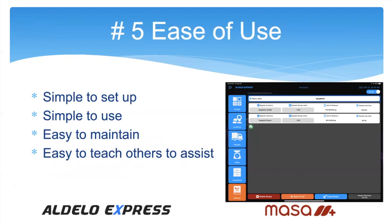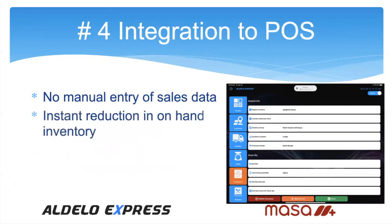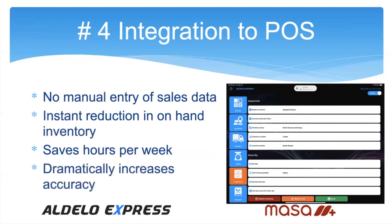It's really simple to just hand the iPad to an employee and say, go count the cooler. Number four: integration to POS. There is no manual entry of sales data. You touch a button on the front end to ring up an item, and it's immediately taken out of inventory in the back end — an instant relationship with no degradation. It saves a lot of time every week and dramatically increases inventory accuracy.